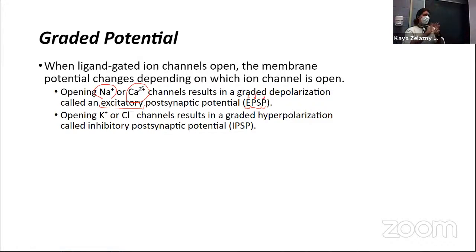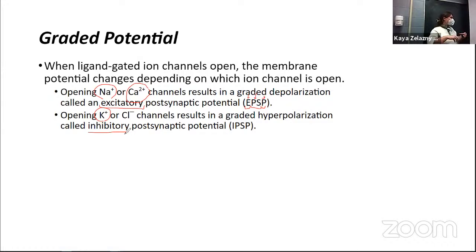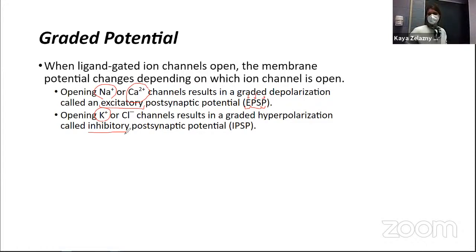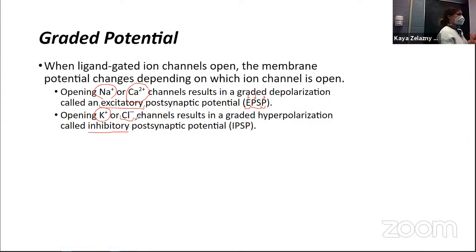Opening a potassium channel causes hyperpolarization, moving us farther away from resting membrane potential and therefore farther from threshold, making it less likely the post-synaptic cell will fire its own action potential — that's an inhibitory post-synaptic potential, or IPSP. We haven't talked about chloride ions before, but just remember: chloride ions want to enter cells and they're negative, so letting chloride in makes the cell more negative — just like potassium leaving — and that's also inhibitory, making the cell less likely to fire.